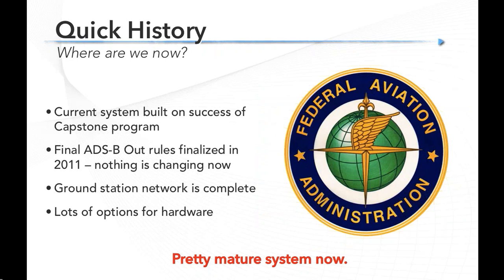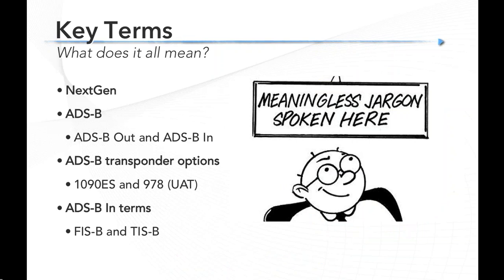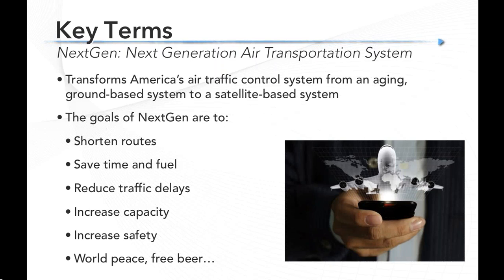The current system was built on the success of that Capstone project. The final rule came out in 2011, and there's been a lot of activity since then. There are over 650 ground stations throughout the United States, Puerto Rico, and Guam that can see aircraft through ADS-B, and there are lots of options for hardware. Now let's go to some key terms — we'll be touching on NextGen, ADS-B out and in, key transponder options, and ADS-B in terms.